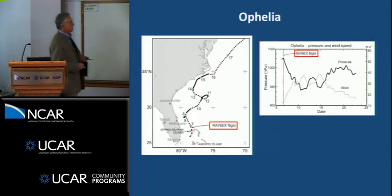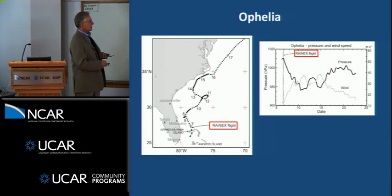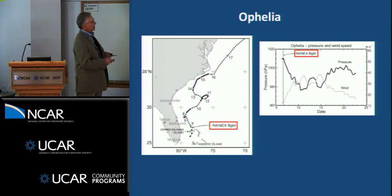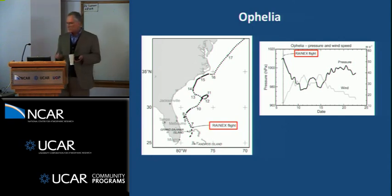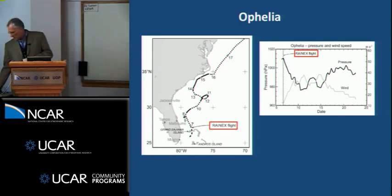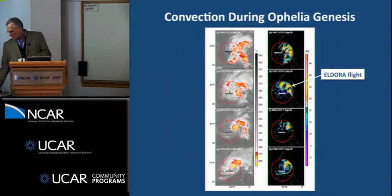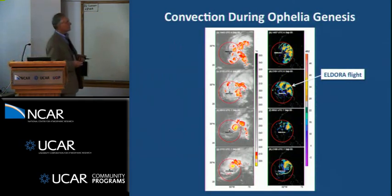We observed Ophelia. Here's the time of the flight — right here, it was just off the Florida coast. This shows that we caught it right before it really developed into a hurricane. It was just a depression at this stage, but then in the next days the pressure decreased, the winds increased, and it became a hurricane. So we caught it right at that stage where it was about to go into tropical cyclone structure.